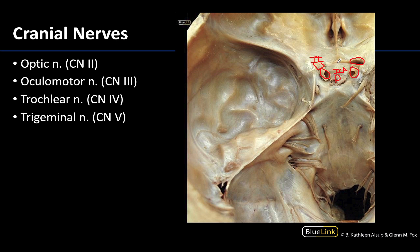The oculomotor nerve, cranial nerve 3, is located on the lateral walls of the sella turcica, heading towards the superior orbital fissure. Both the root of the trigeminal nerve, which I'm outlining here, as well as the trochlear nerve, found around this region, can be seen in association with the dura on the petrous part of the temporal bone. The trigeminal root is very large and obvious, whereas the trochlear nerve is not, which makes sense as it's the smallest cranial nerve.